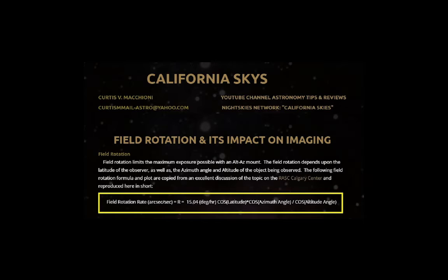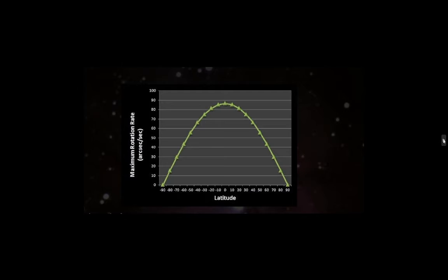Looking at what that equation tells us: the higher you live in latitude, the better off you are. That is one of the few advantages of a high latitude. The curve shows us that at zero latitude — which is the equator — this is where we're doing worst, at a maximum rotation rate.